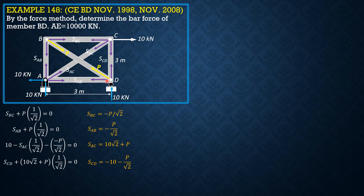At joint D, summing forces horizontally: S_CD plus P times 1/√2 equals 0, so S_CD = −P/√2. I leave to you the checking: summation forces vertical at D should be 0, summation forces X at A equals 0, and summation forces Y must be 0 to verify that these stresses are correct.